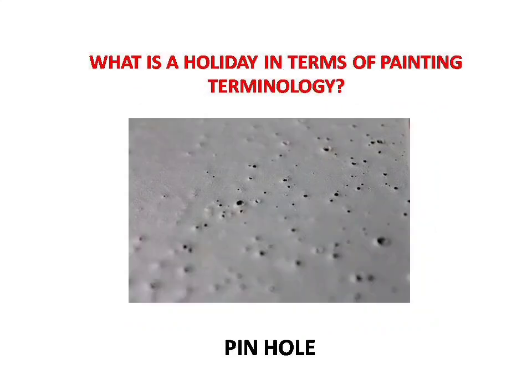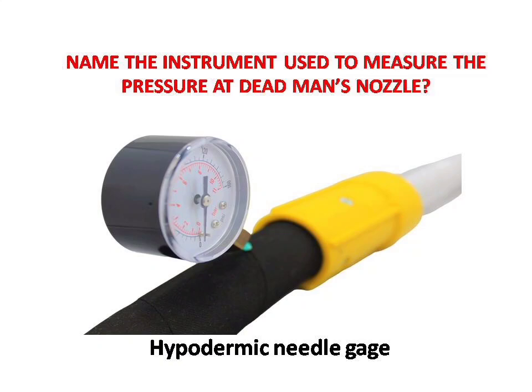Next question: what is a holiday in terms of painting terminology? Answer is: pinhole. Next question: name the instrument used to measure the pressure at the dead man's nozzle. Answer is: hypodermic needle gauge.